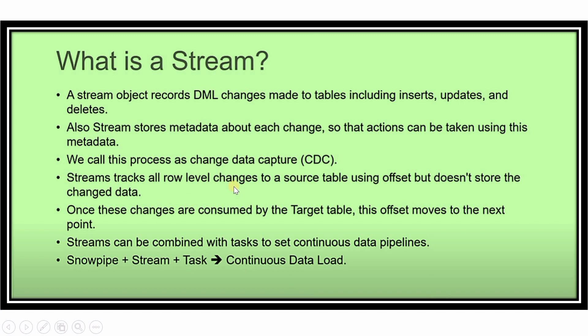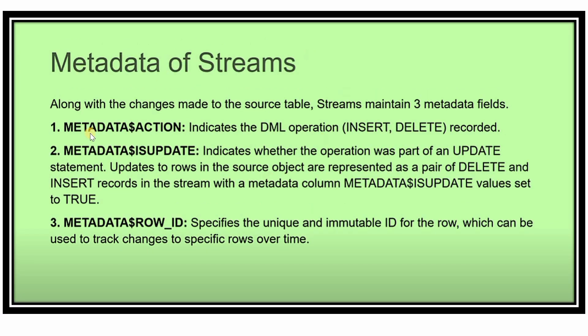So a stream is an object we create on a table to capture whatever changes are made — insert, update, or delete. Now let's understand the metadata of streams. Whenever you query a stream, it creates three metadata columns: METADATA$ACTION, METADATA$ISUPDATE, and METADATA$ROW_ID.